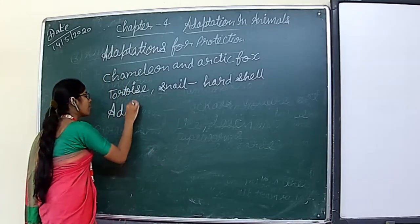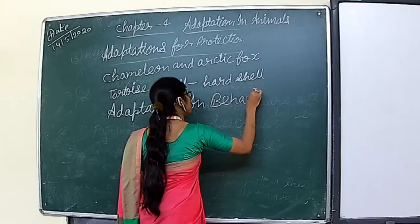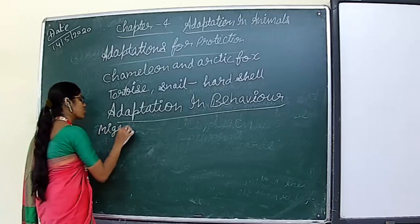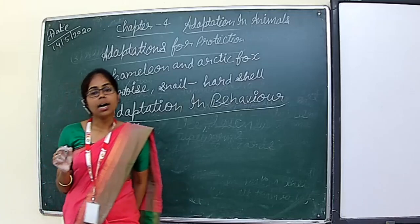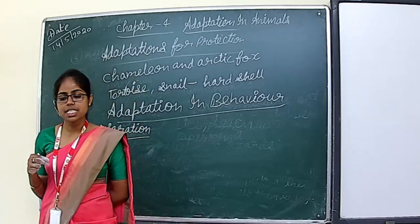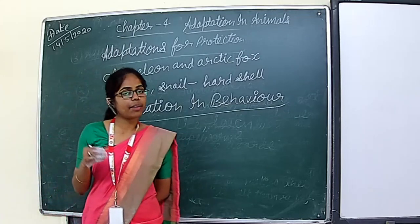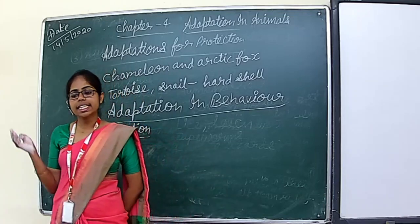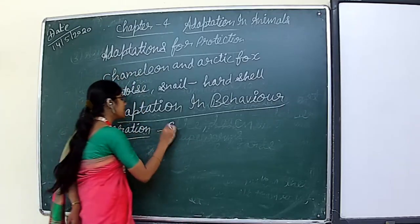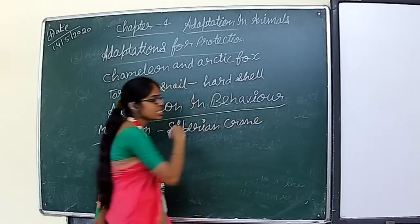Adaptation also involves behavior. The first behavioral adaptation is migration. Migration is the mass movement of animals from one habitat to another. Animals and birds migrate to warmer places in search of food and to escape harsh winter cold. They return back in the spring season. Siberian cranes, sea turtles, and Arctic terns are some animals which show this behavior.